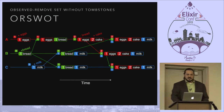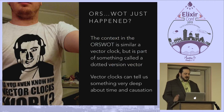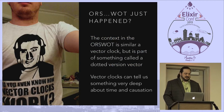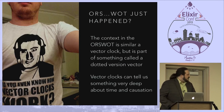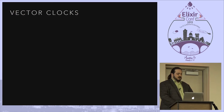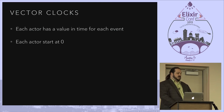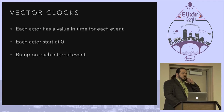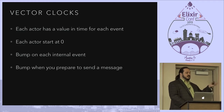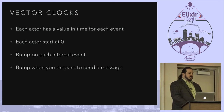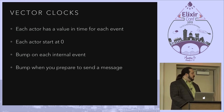This is kind of like a vector clock, but not really — there's a slight difference. Each actor has a value in time for each event, starts at zero, you bump on each internal event, and tag the value. In vector clocks, you bump when you prepare to send a message. With version vectors you don't, and the term 'dotted version vector' simply means the tagging of the value. You send a copy of the clock in every message so you can perform the logic of whether something should be in both sets, and if it should be in both but isn't, you remove it.